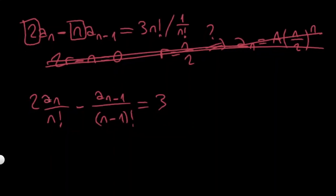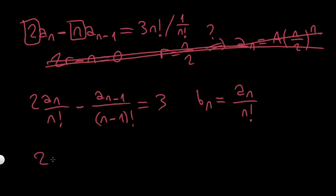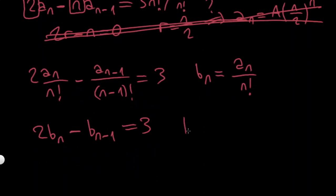Now is it simpler? If I look, I have a_n over n factorial and a_{n-1} over (n-1) factorial. So if I define a second sequence b_n = a_n over n factorial, look what we have: on the left side I have 2b_n, and this other term is just b_{n-1} if you put n equal to n-1. So this becomes minus b_{n-1} equals 3. Now this is linear!